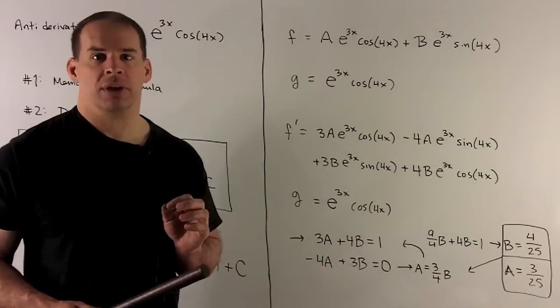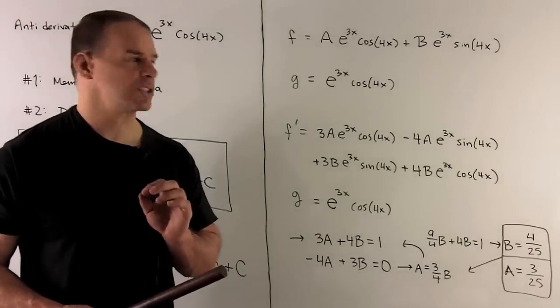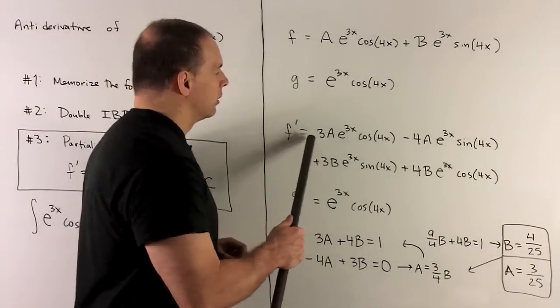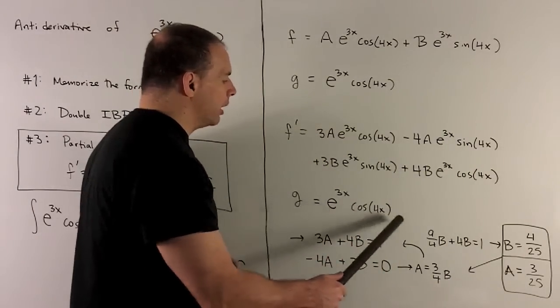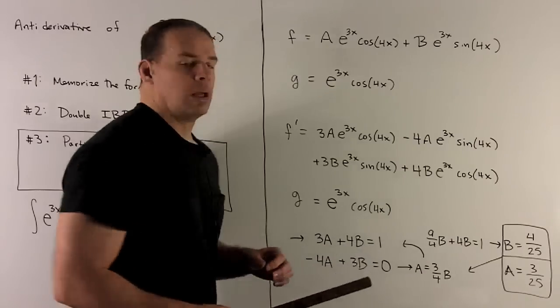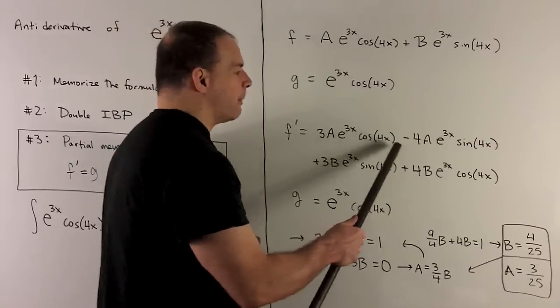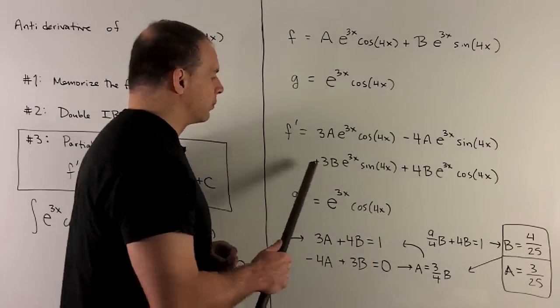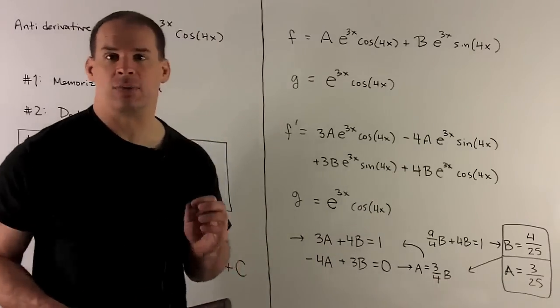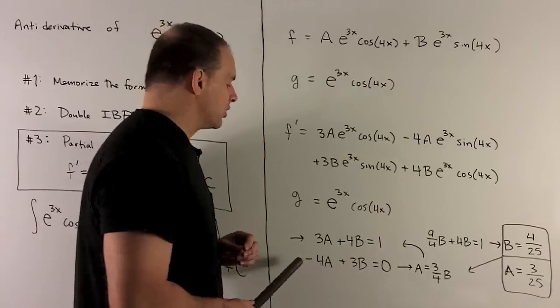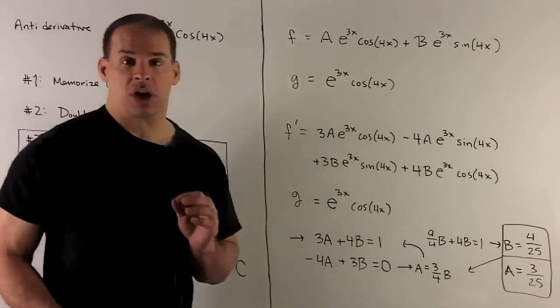Now, we just match up like terms. First, we're going to pick out all the coefficients for e to the 3x cosine 4x. We'll have 3a plus 4b, and that's going to be equal to a 1 on the other side. We'll pick off the coefficients for e to the 3x sine 4x. I'll have a minus 4a, I'll have a 3b. And on the other side, we're going to have a 0, since there's no e to the 3x sine 4x, coefficient 0. So, it gives me another equation. Now, we have two equations, two unknowns. We can start solving.